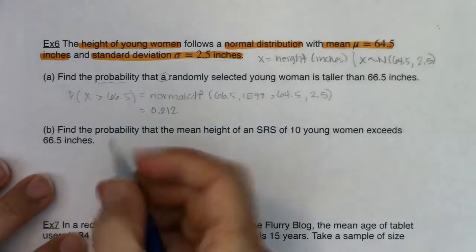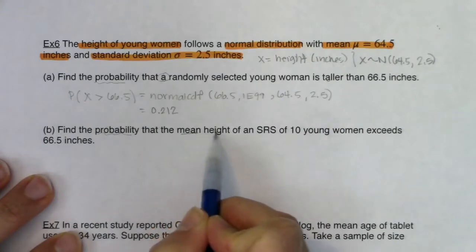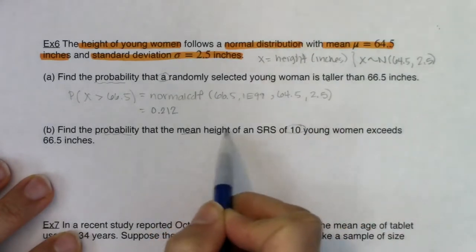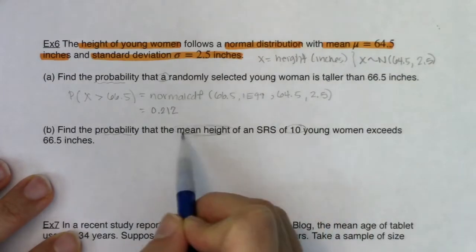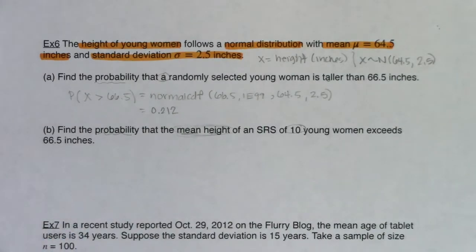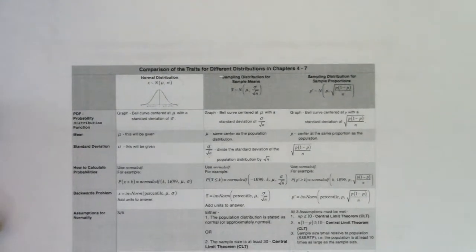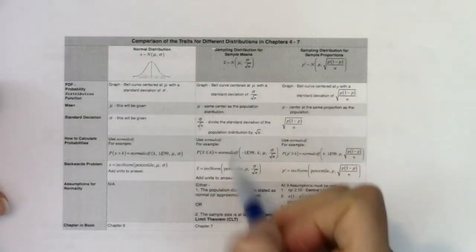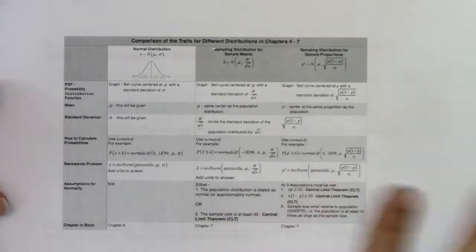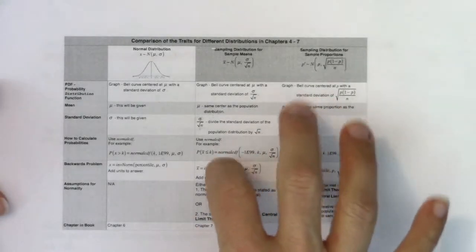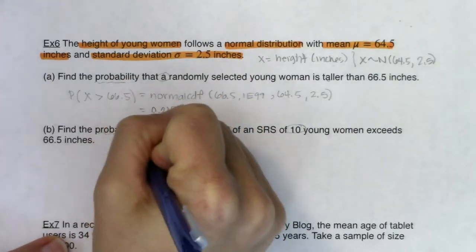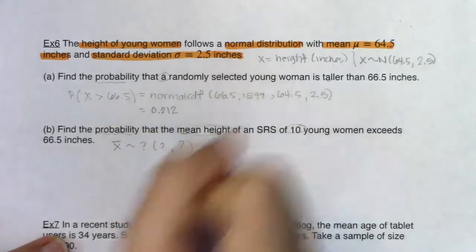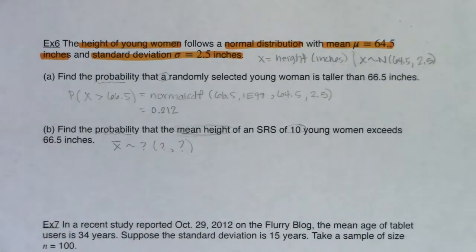Now let's contrast that to the wording in 6b. I still see 'probability,' but now we have mean height and an SRS of 10. This is the clue — I'm now looking at a sample of size 10 and I want the average. Once I take a random sample, I'm no longer on the population distribution; I need to look at the sampling distribution. Before any normalcdf work, let's figure out the distribution for x-bar.